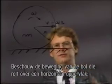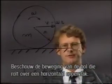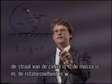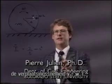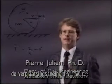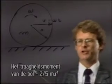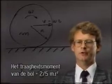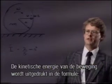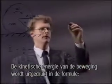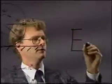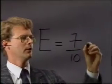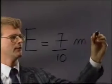Consider the motion of a sphere rolling on a horizontal surface. The radius of the sphere is r, the mass is m, the angular velocity omega, and the translation velocity v is equal to omega times r. The moment of inertia of the sphere is equal to two-fifths of the product of the mass m and the square of the radius. The kinetic energy of the motion is given by the following formula: E is equal to seven-tenths of the product of the mass times the square of the velocity.